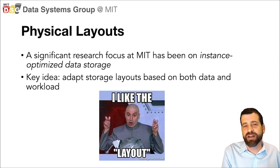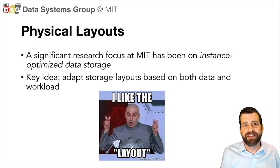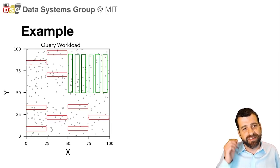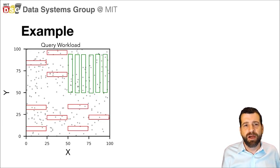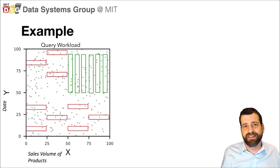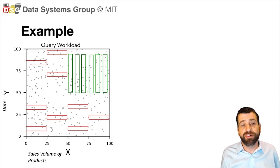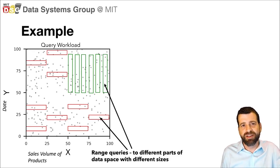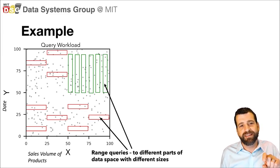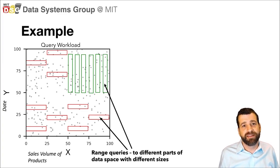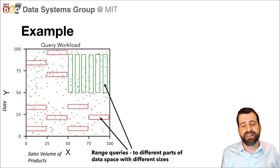I just want to give a brief aside to talk about some of the cool work that's been going on in physical layouts, to give you an idea of what I mean by storage systems that can take advantage of new layout optimizations. Imagine that you have some query workload over some data space. Here I've shown a two-dimensional table — imagine these are dates and sales volumes of different products. We've got queries now which are represented by boxes that look at different regions of this data space.